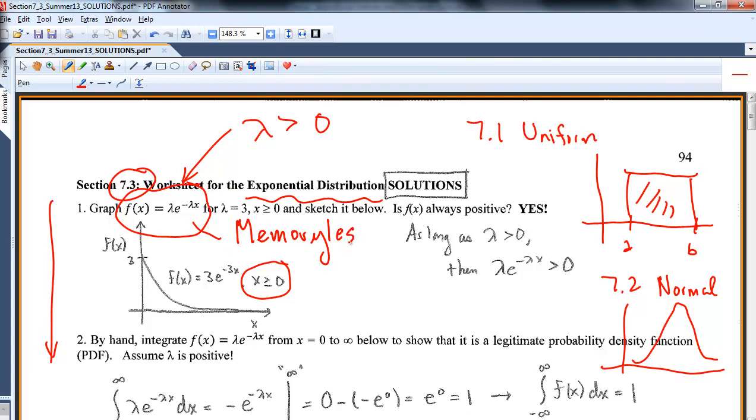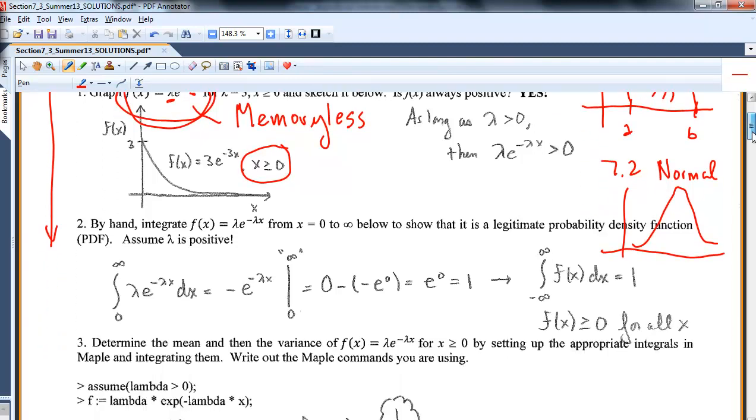You've heard about memoryless back in the discrete random variables when we did the geometric. That will come up in the second or third page of this. The big thing to know right now is this is an exponential. He'll always take on this form. Lambda is the parameter. He integrates to 1. He's legal. He's always positive.